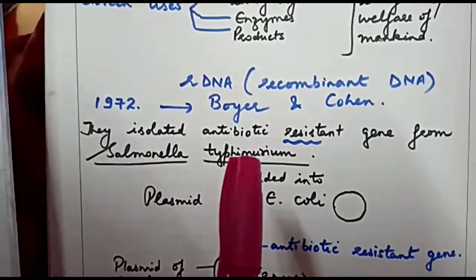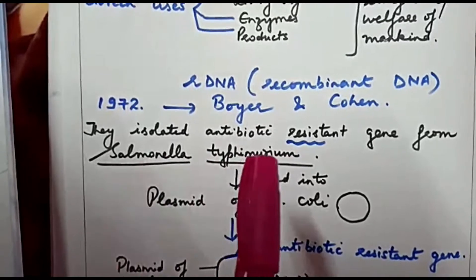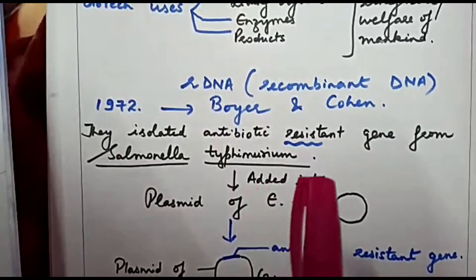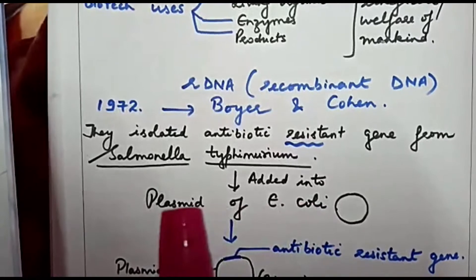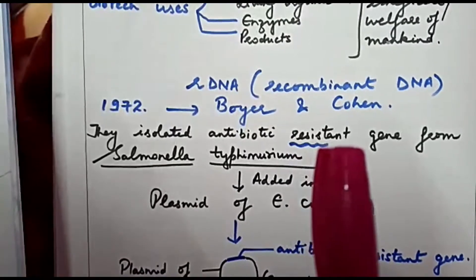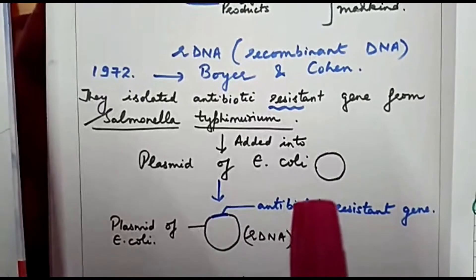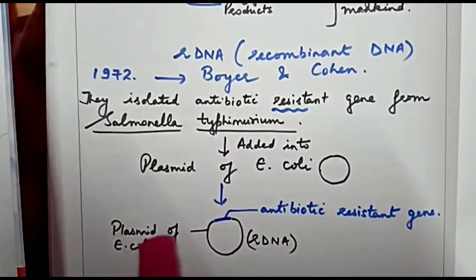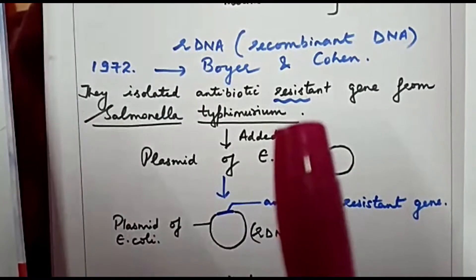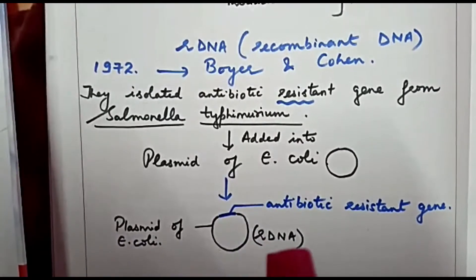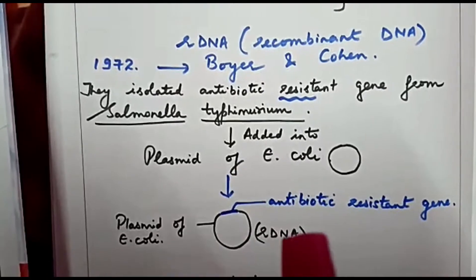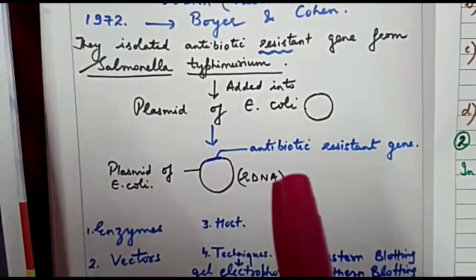Salmonella is a bacteria, and this blue sketch pen represents the antibiotic resistant gene from Salmonella typhimurium. The structure drawn with the black pen is the plasmid of E. coli, and the small portion in blue is the antibiotic resistant gene. The structure constructed from these two DNAs is known as rDNA — Recombinant DNA — meaning it is made from the joining of two types of DNA.